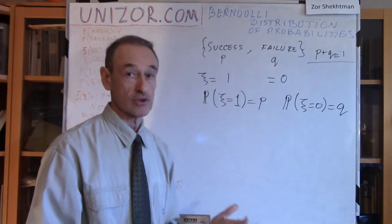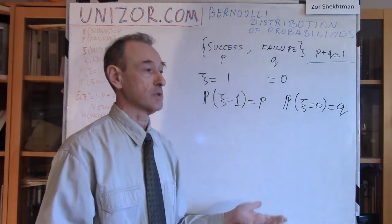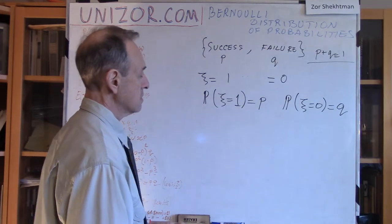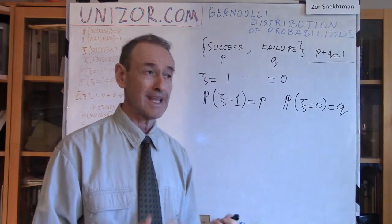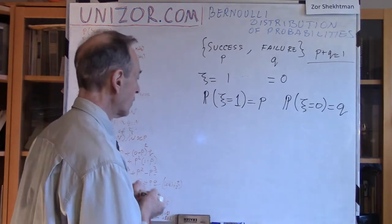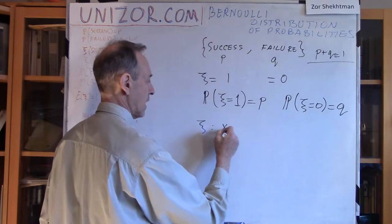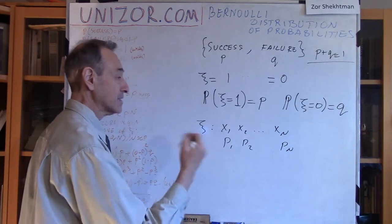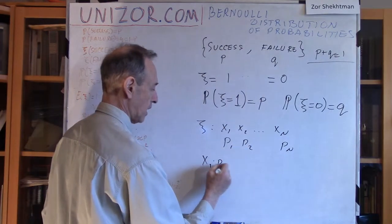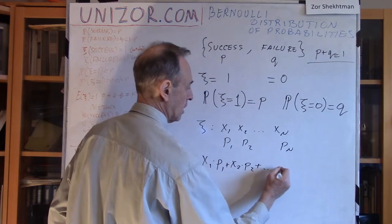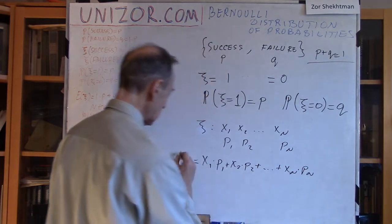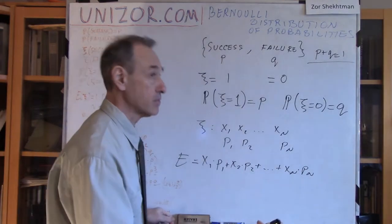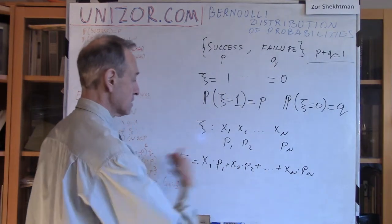One and zero can be measured in some unit — conditionally, say dollars or tons of sugar. Now, expectation is the weighted average of different values. If our random variable x takes values x1, x2, ..., xn with probabilities p1, p2, ..., pn, then the expectation is x1 times p1 plus x2 times p2 plus ... plus xn times pn. This is the weighted average: each value is weighted by its frequency, and that's how expectation is calculated.